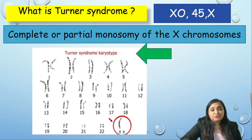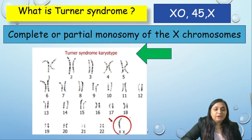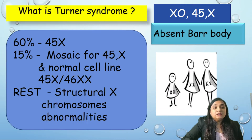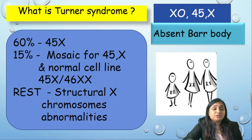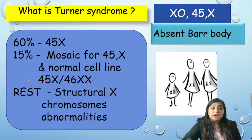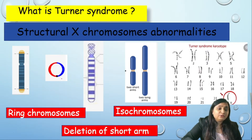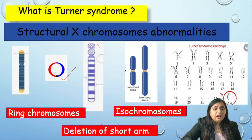The first question: what is Turner syndrome? It is complete or partial monosomy of the X chromosome — 45 XO. In the karyotype, one X is missing. There is absence of Barr body, which is the diagnostic criterion for Turner syndrome. 60% of cases are 45X; in 15% it is the mosaic variety, where some cell lines have normal 46XX and others have 45X. The rest could be structural X chromosomal abnormalities like ring chromosomes, deletion of the short arm of the X chromosome, or isochromosomes.